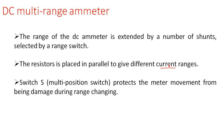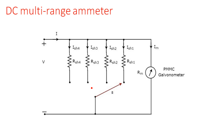The switch is a multi-position switch that selects different ranges and protects the meter movement from being damaged during range changing. Now let us see how the construction of the multi-range ammeter is done. This multi-range ammeter is also known as a parallel multi-range ammeter because all the resistors are connected in parallel. Here we have selected four different ranges, so we use four different resistors. The ranges are I1, I2, I3, I4 — however many resistors we connect, that many ranges we can measure.